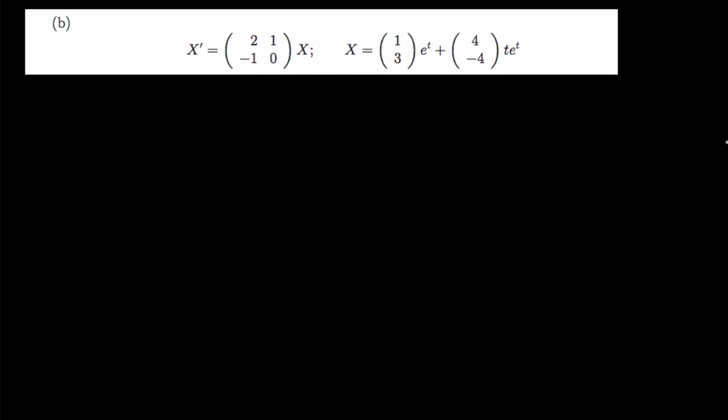We are in question b. Question b says we should show that x — the x we're given here — is a solution of this linear homogeneous system. The system has already been written in matrix form, which should have been the first step. So our aim is to confirm that the x given by this column matrix is actually a solution of this linear homogeneous system.